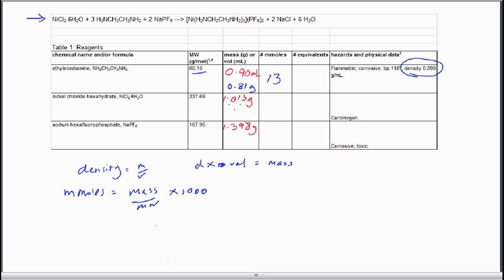For the nickel chloride, 1.013 divided by 237.69—and you notice that molecular weight actually includes the six waters that are included in the crystal because you actually weighed out those six waters as well. That value comes out to be 4.262 millimoles. And the sodium hexafluorophosphate, same calculation, 8.324 millimoles.